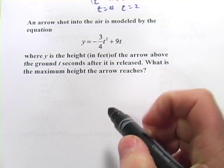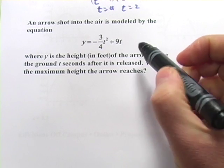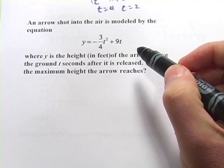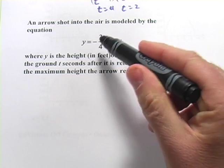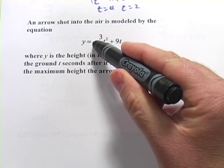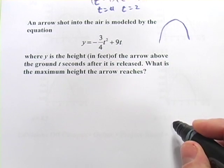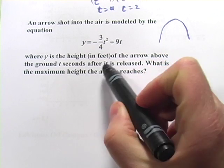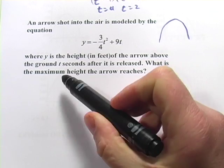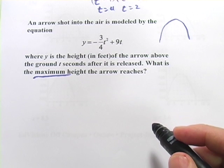All right. Let's look at this next one. This one is another arrow shot into the air. But there's a slightly different thing we need to find. This one says an arrow shot into the air is modeled by the equation y equals negative 3 fourths t squared plus 9t. We've got that negative sign in front of the squared term. So you know you're going to have some kind of downward opening parabola. Where y is the height in feet of the air above the ground t seconds after it is released. What's the maximum height the arrow reaches?